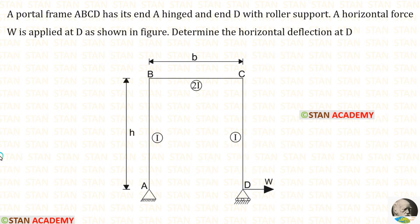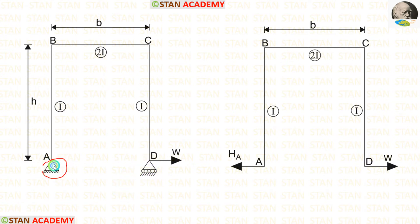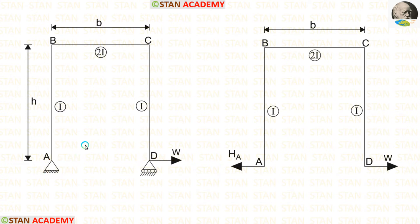Now let us calculate the reactions in the frame. At point A, we have a hinged support, and at point D, we have a roller support. In hinged and roller supports, there will be no moment. So at points A and D, there will be no moment. Also, there is no vertical load acting in this frame, so the vertical reaction at points A and D will be zero.